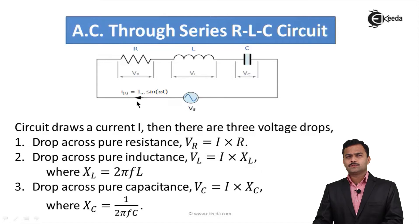This I is responsible for three voltage drops. One drop is across pure resistance given by I × R. Second drop across pure inductance VL = I × XL, where XL is inductive reactance given by 2πfL. One more drop is across pure capacitance given by VC = I × XC. Again, XC is capacitive reactance given by 1/(2πfC).